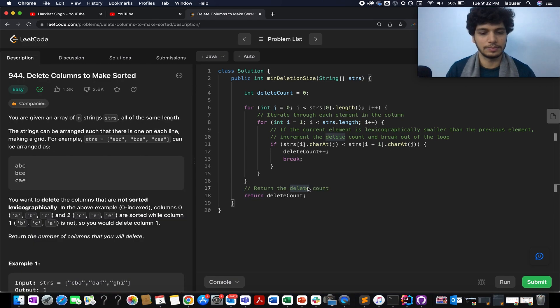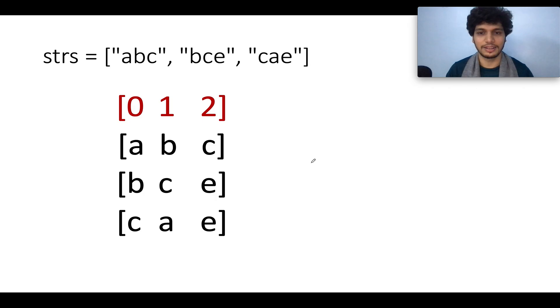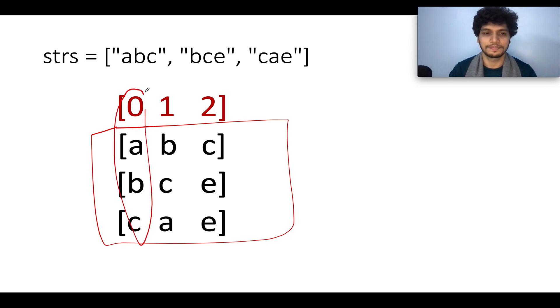To conclude it, let's quickly walk through the presentation section. I have taken a very simple example, the same one that was specified in the question. So there are three columns. If you arrange them in a form of a matrix, the first row will have A, B, C, the second one will have B, C, E, the third one will have A, C, E.